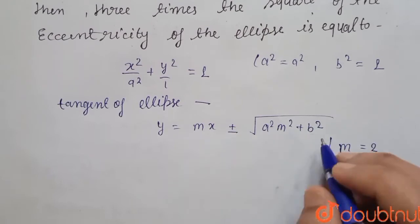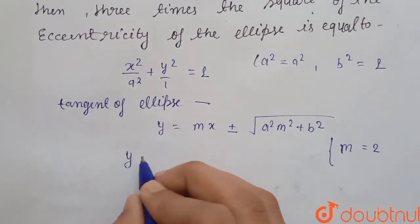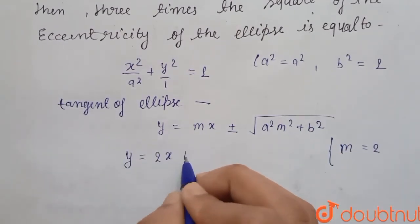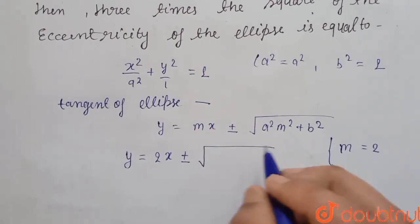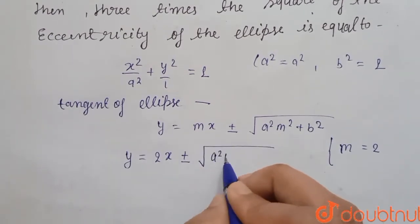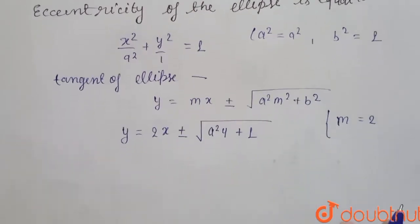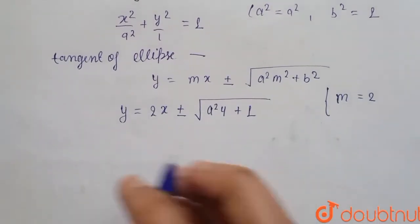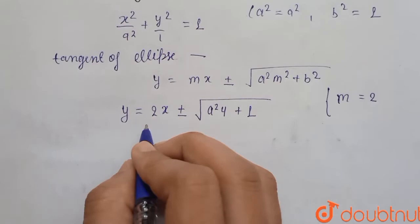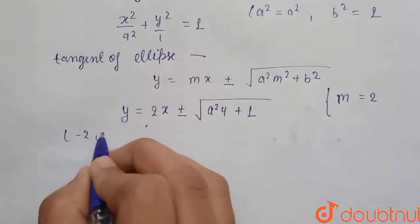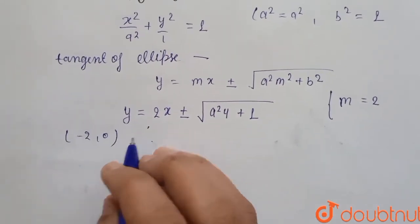Now here put the value of m, a and b. So we get y = 2x ± √(a²·4 + 1). Now we have given in question also that this tangent is passing through (-2, 0).